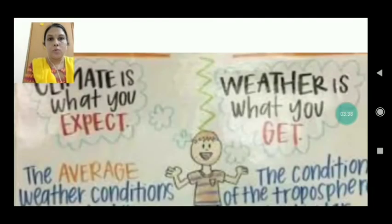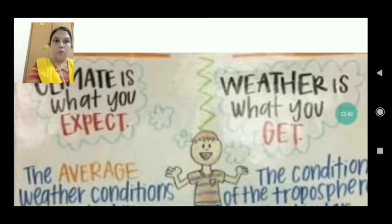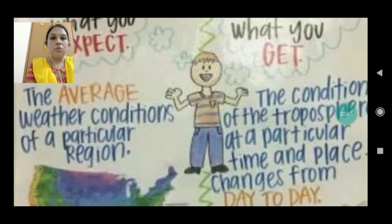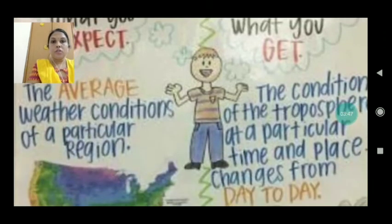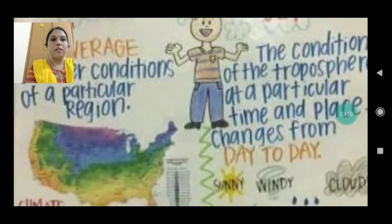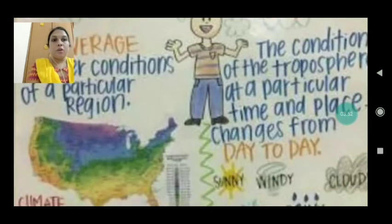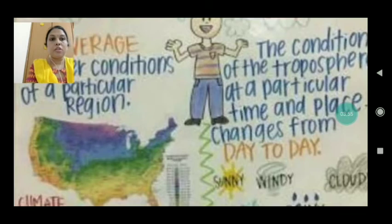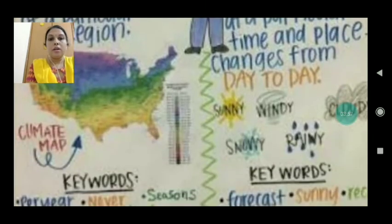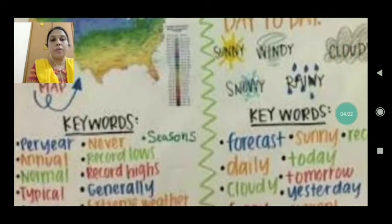So children, what is climate? Climate is what to expect, and weather is what you get. The average weather conditions of a particular region represent climate, while the condition of the troposphere at a particular time and place changes day to day. On the climate map you can see: sunny, windy, cloudy, snowy, and rainy conditions shown for weather.